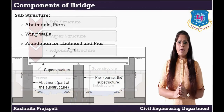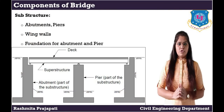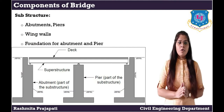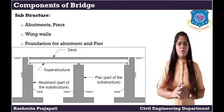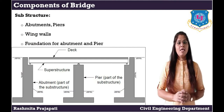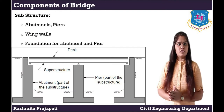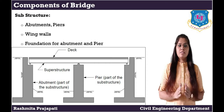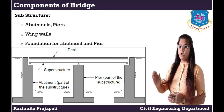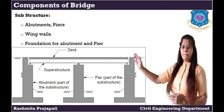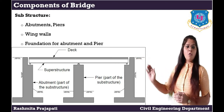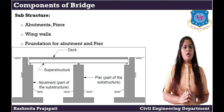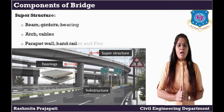Now, what is substructure? A component of a bridge below the level of the bearing is known as substructure. It consists of the abutment, pier, wing wall and foundation for abutment and pier.